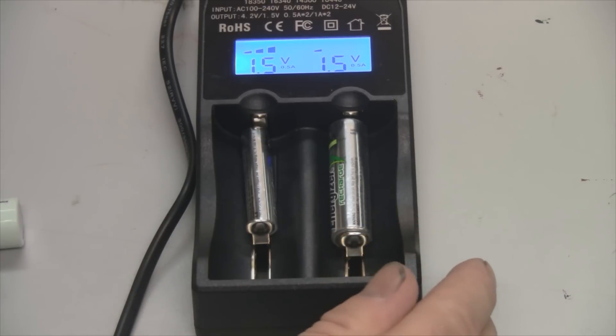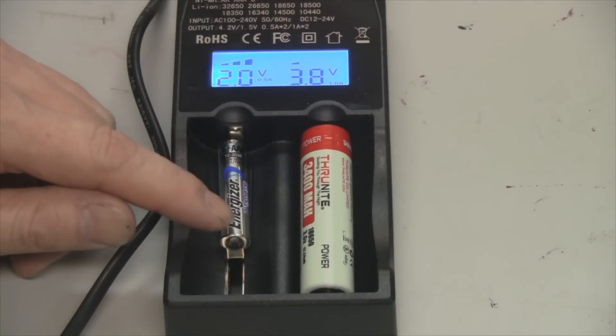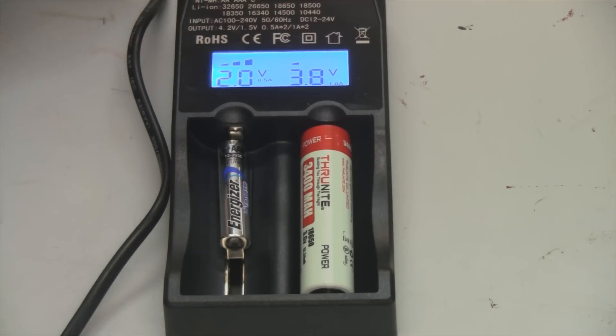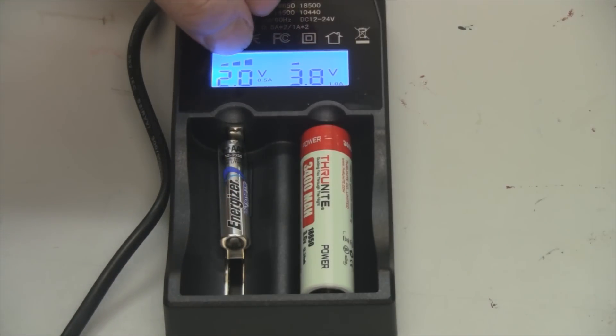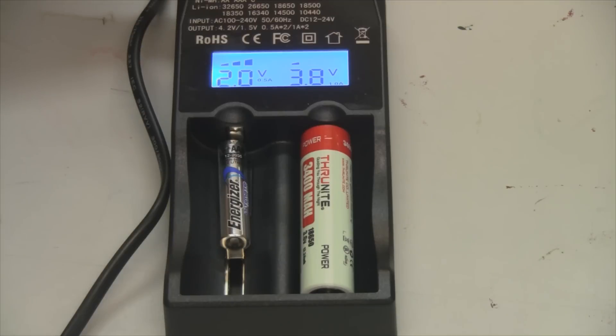As you can see, the triple-A has fully charged, it's not blinking anymore, it has a fully charged bar indicator there. The Thrunite brand new battery is still charging and blinking, and it gives you an indication of how far it's charged.